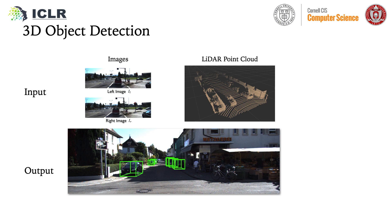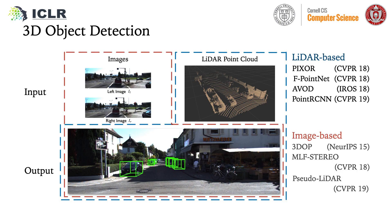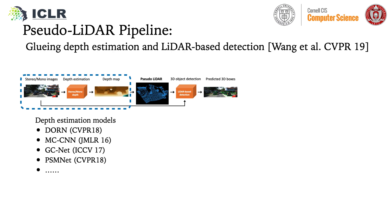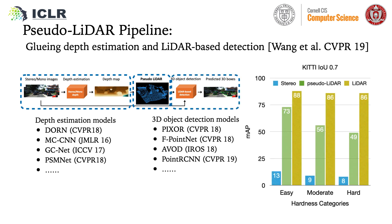Recent methods can be categorized into LIDAR-based and image-based methods according to the main input signal they use. Image-based methods fell far behind the LIDAR-based ones in terms of detection accuracy until the introduction of the Sudolidar pipeline last year. Instead of using images in perspective view as was common in prior work, the Sudolidar pipeline proposed using existing depth estimation models to convert images into a so-called Sudolidar point cloud and then applying LIDAR-based 3D object detection models. By simply changing the representation, the pipeline greatly reduced the gap between image-based and LIDAR-based methods.